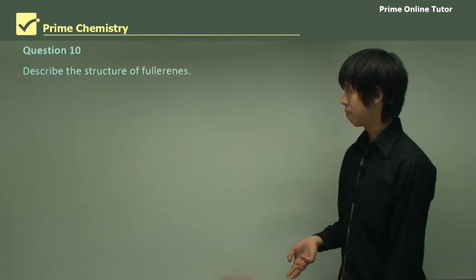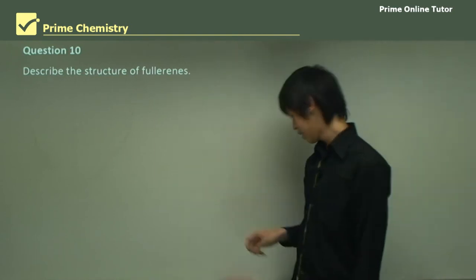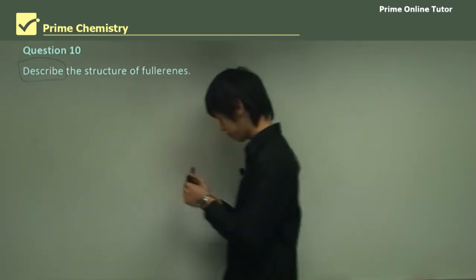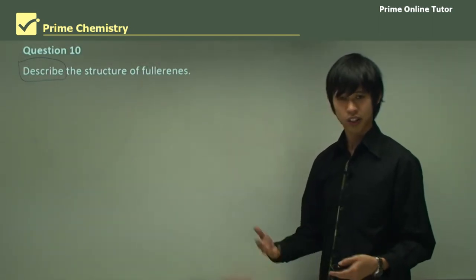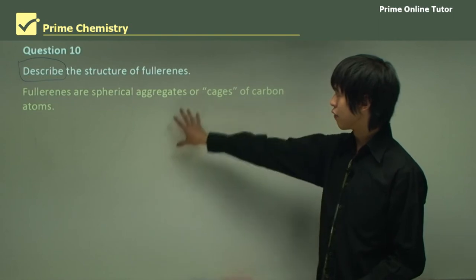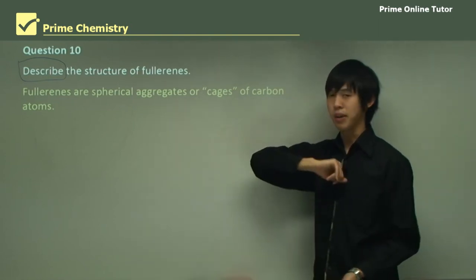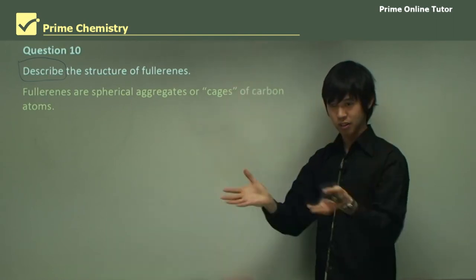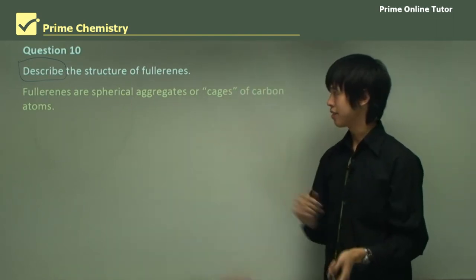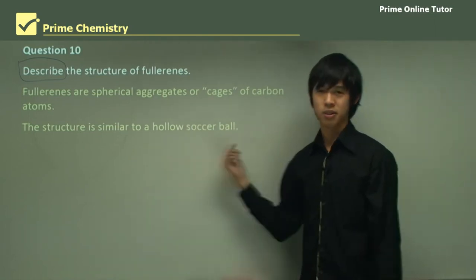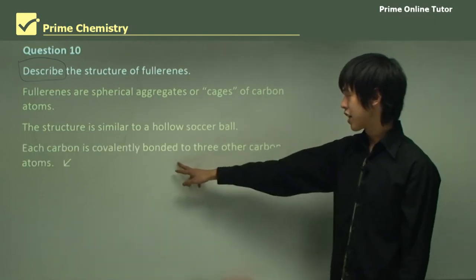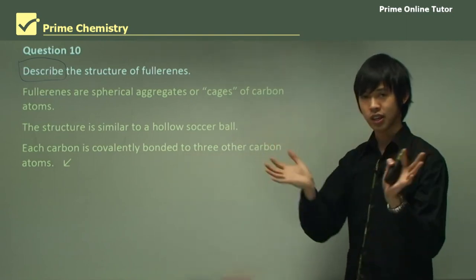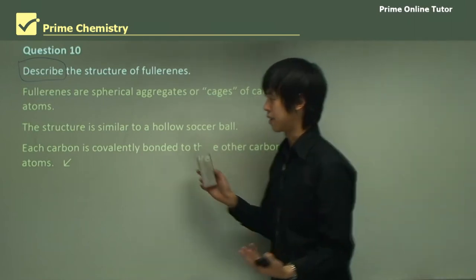So we'll move to question ten. Describe the structure of fullerenes. Describe is our verb, and we always concentrate on what the verbs mean. Describe is just sort of explained in brief terms. Fullerenes are spherical aggregates or cages of carbon atoms. Remembering that fullerenes structure is simply just the soccer ball shape of carbons. The structure is similar to a hollow soccer ball. And each carbon is covalently bonded to three other carbon atoms, which gives you that spherical structure. And that's what a fullerene essentially is.